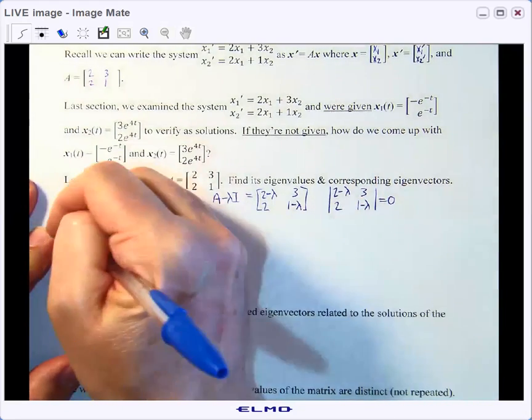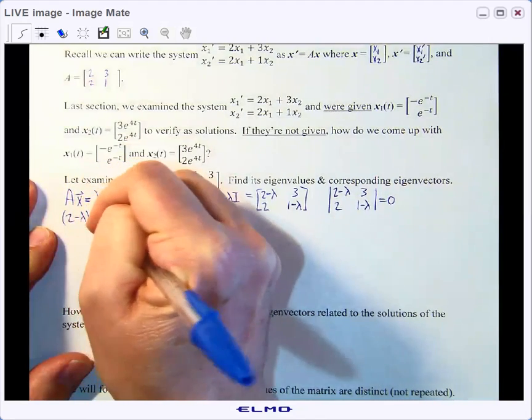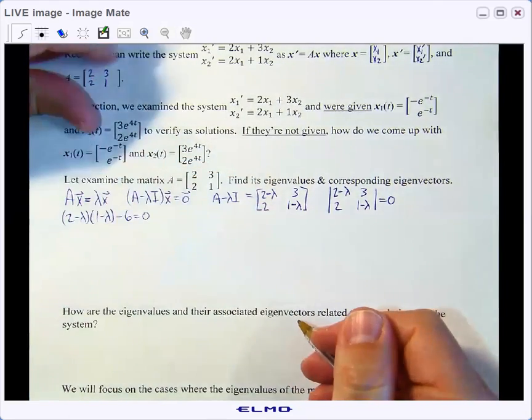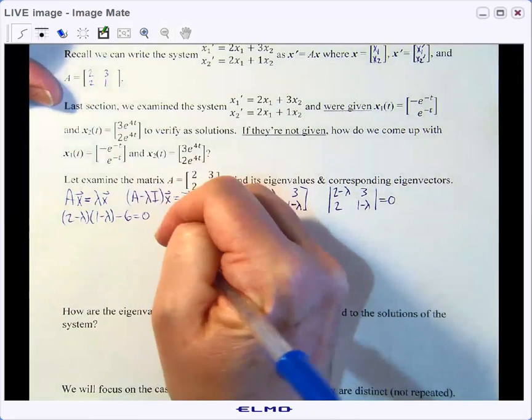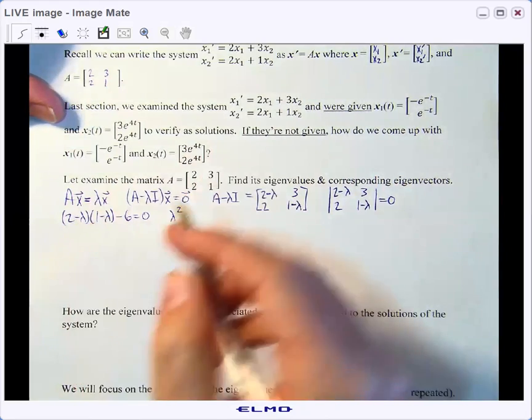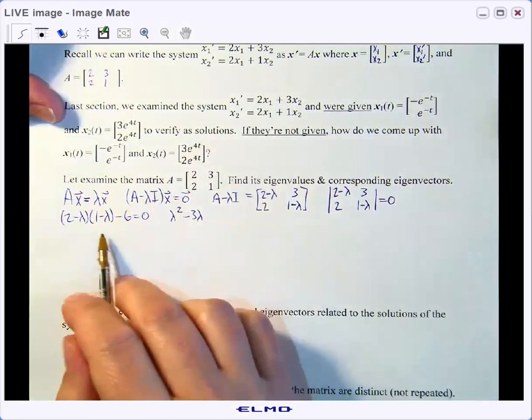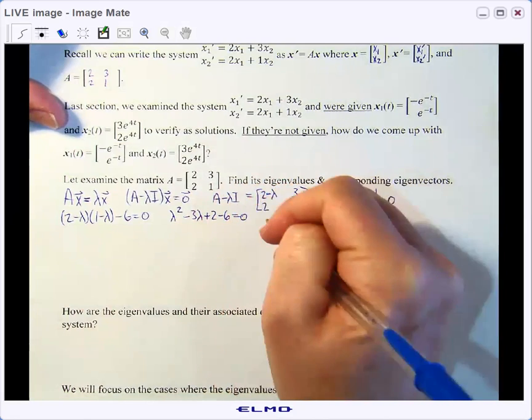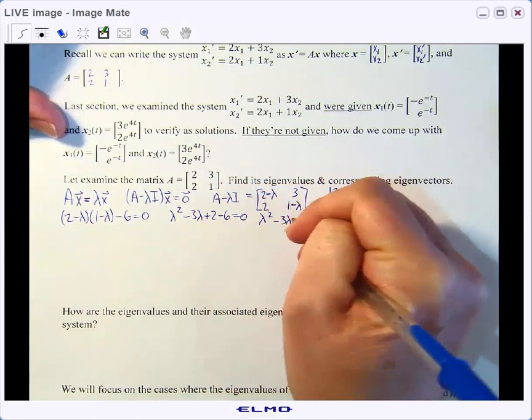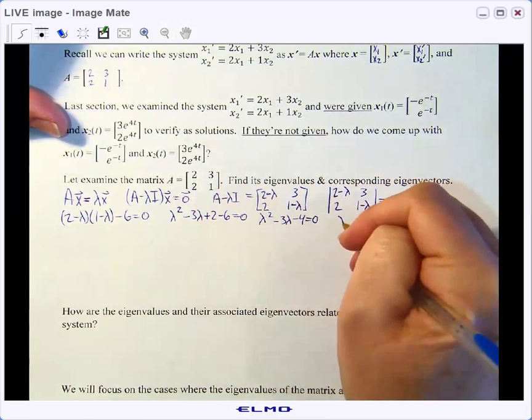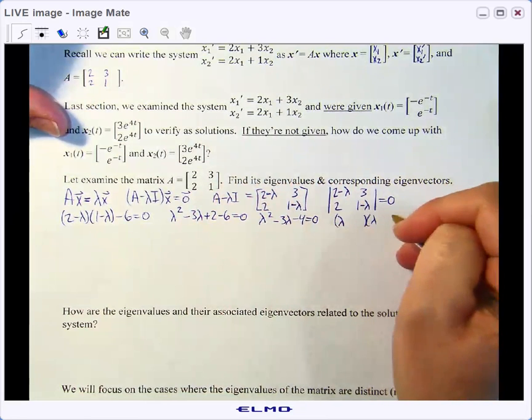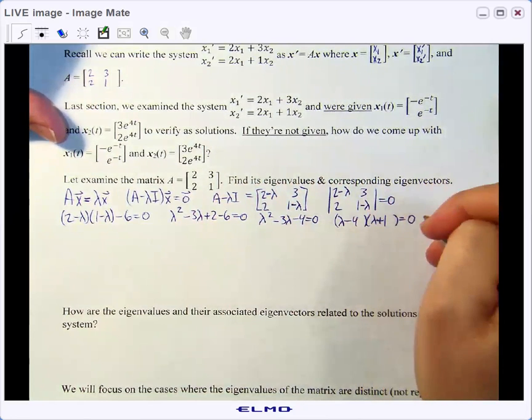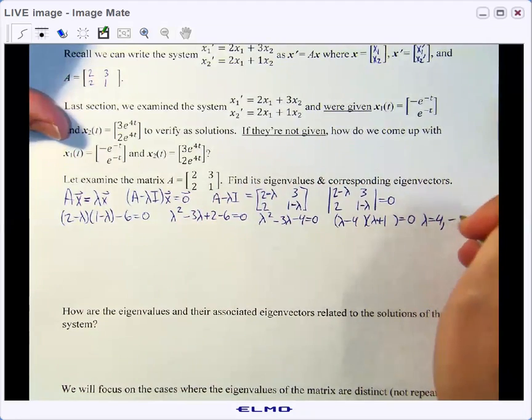Let's do that. So we're going to get 2 minus lambda times 1 minus lambda minus 6 equals zero. And if we solve this guy, we're going to get lambda squared minus 2 lambda minus a lambda is minus 3 lambda. And then the constant is going to be plus 2 minus 6 equals zero. So that's going to be lambda squared minus 3 lambda minus 4 equals zero. And we're lucky because this guy even factors. So our eigenvalues are 4 and negative 1.